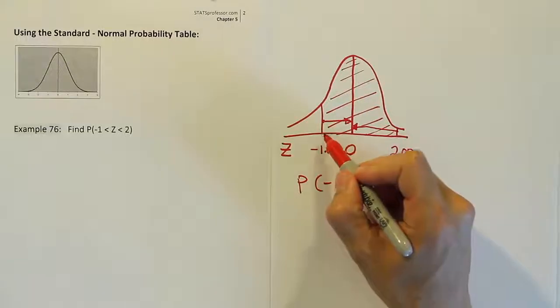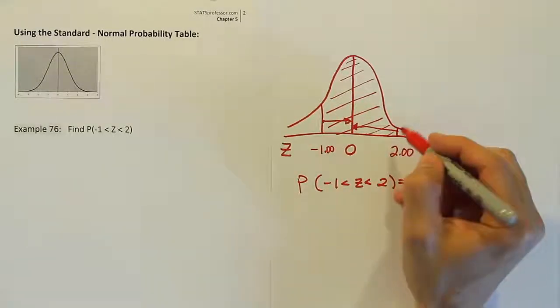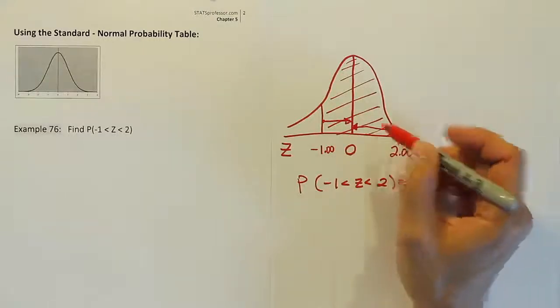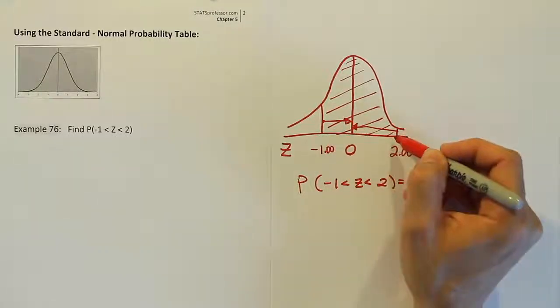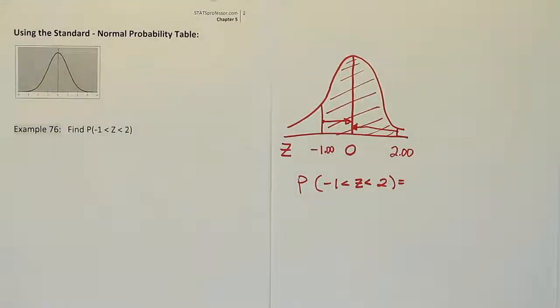So remember, any time you shade across the middle, you will add the answers from the table. So if you can't visualize it from the drawing, just remember, if you shade across the middle, you're going to add the two numbers you get from the table. All right, let's go to the table and look those numbers up then.